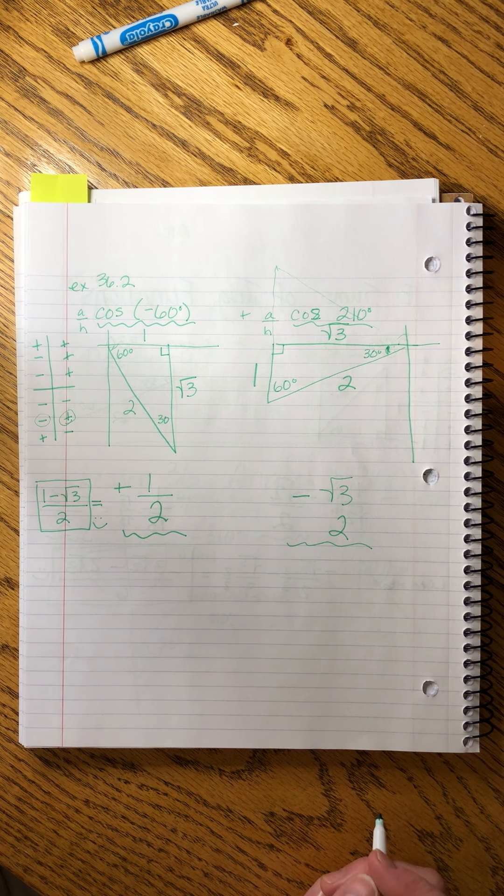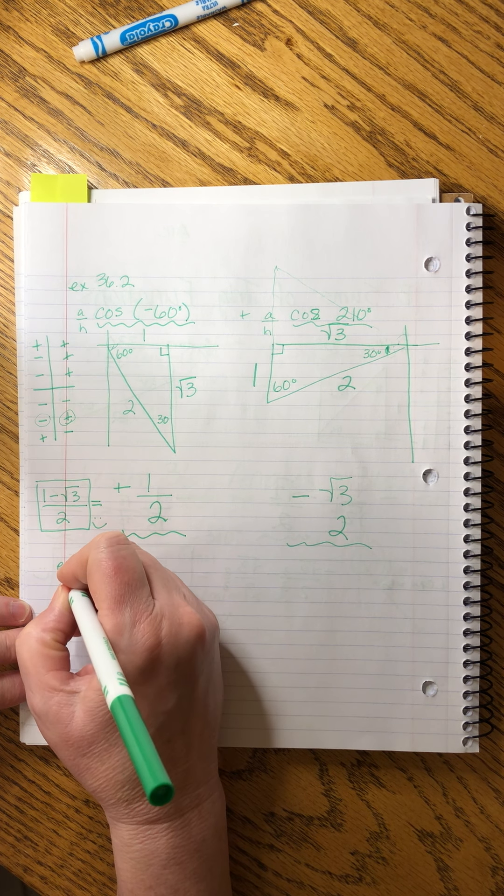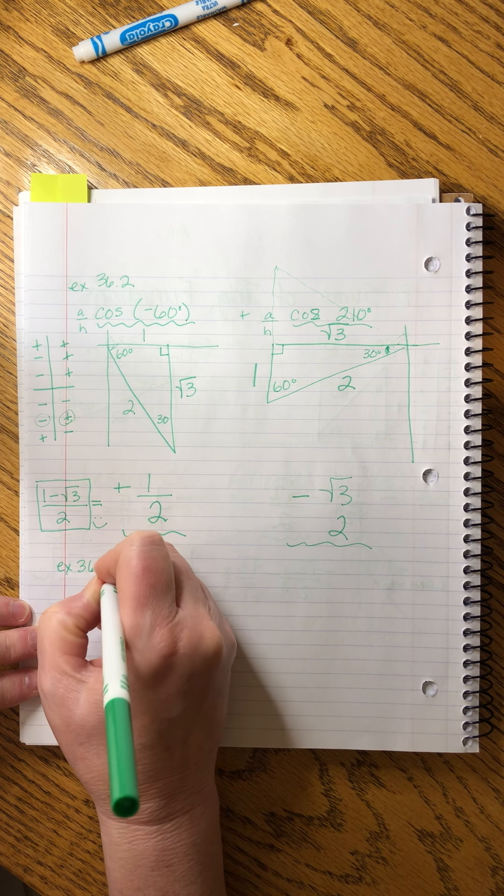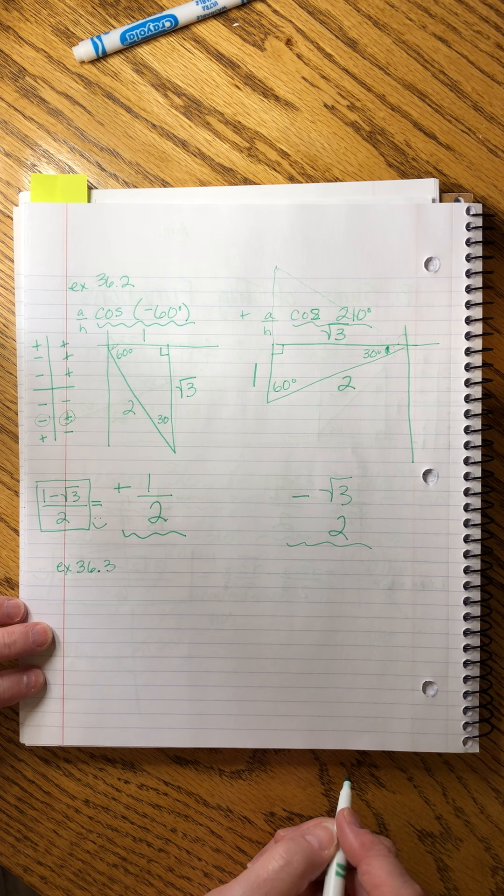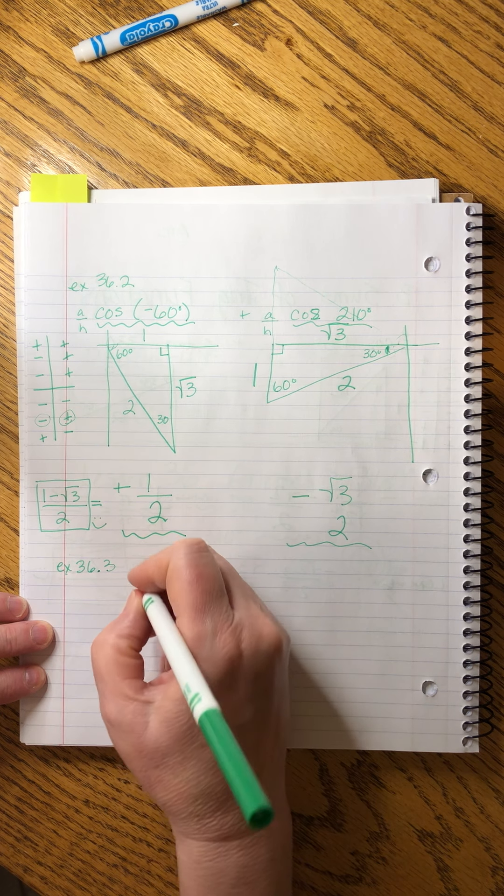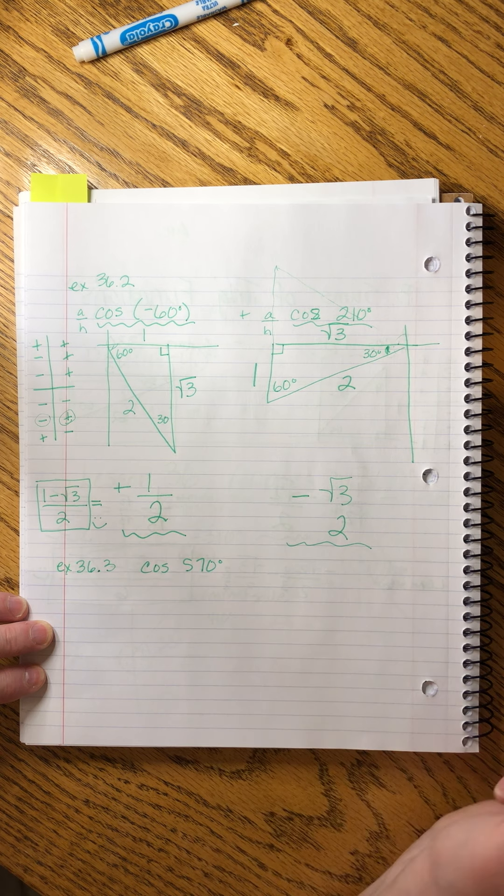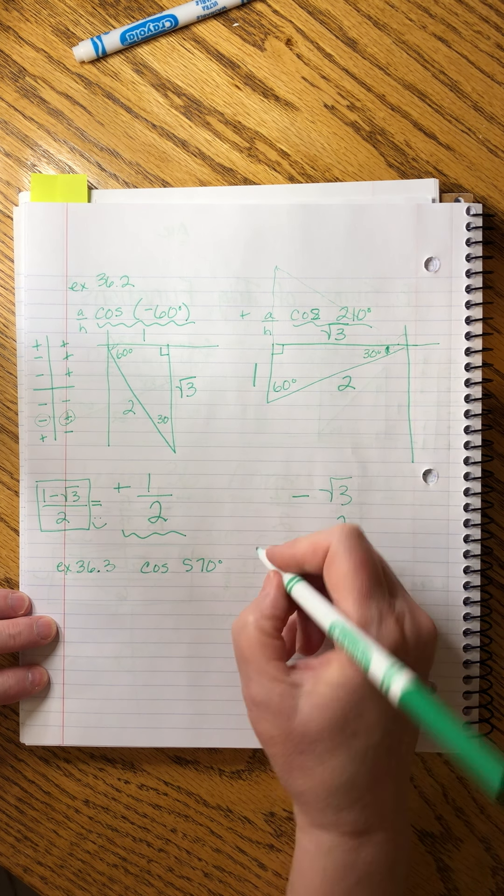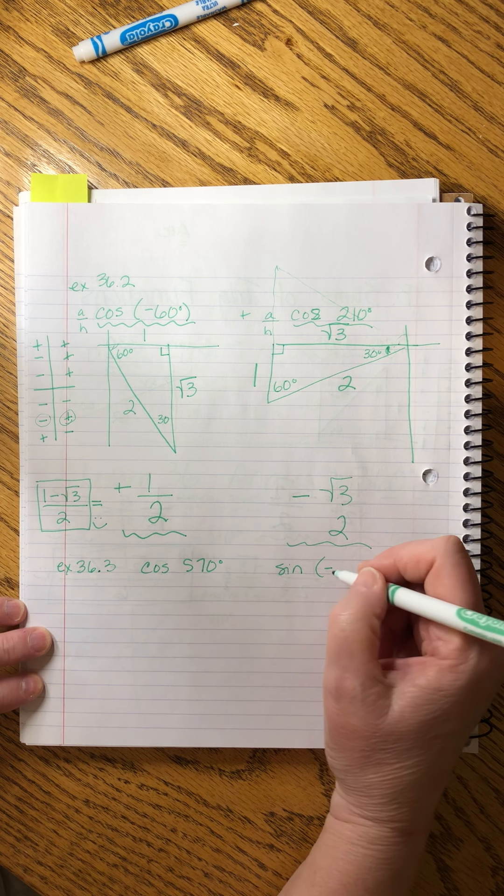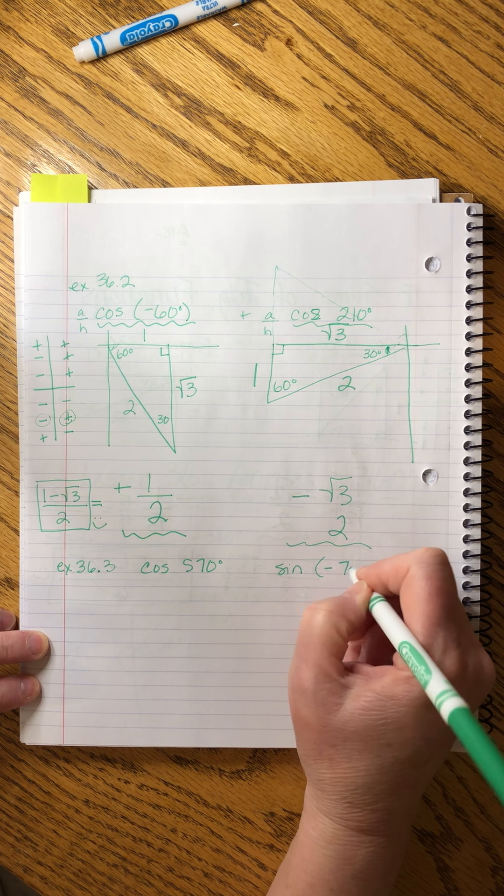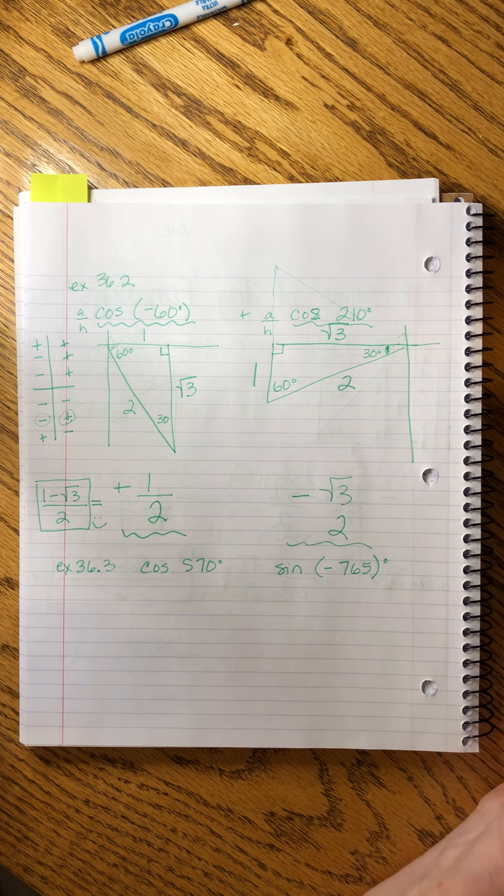Last one. Now, finally, we get into our big spins, angles greater than 360 degrees. Example 36.3: Evaluate cosine of 570 degrees and sine of minus 765.